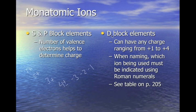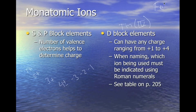In the D-block elements, they can have charges ranging from positive 1 to positive 4. When we name D-block elements, which ion is being used must be indicated with a Roman numeral. For example, if we're using iron (Fe) with a 3+ charge, we write iron(III) — we take that oxidation number and put it in Roman numerals in parentheses.